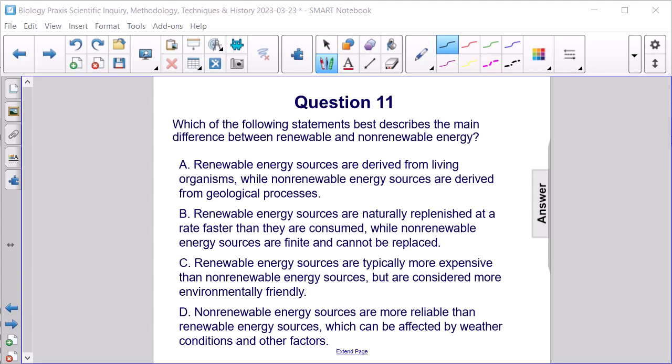The main difference is B. Renewable energy sources are naturally replenished at a rate faster than they are consumed, while non-renewable energy sources are finite and cannot be replaced.